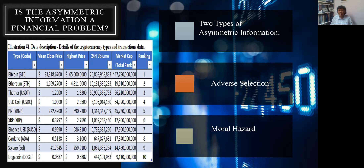This type of asymmetric information, especially adverse selection, happens quite a bit with markets trading marketable securities. I picked cryptocurrency marketable securities as my example, and as you can see here, in the last year there's been quite a bit of change with the prices.